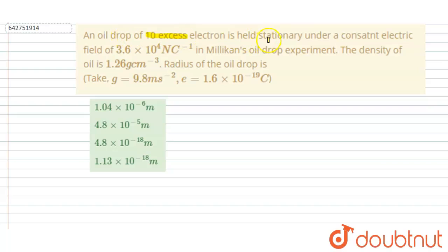Hello everyone. An oil drop of 10 excess electrons is held stationary under constant electric field of 3.6 × 10⁴ N/C in Millikan's oil drop experiment. The density of the oil is given here. You have to find out the radius of the drop.